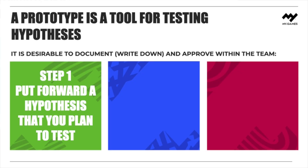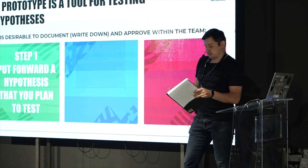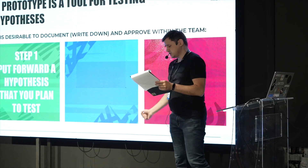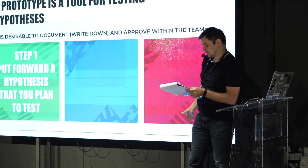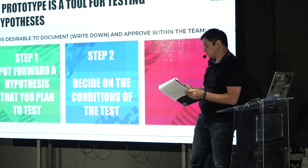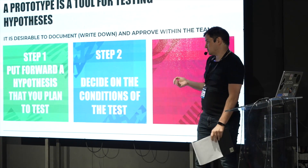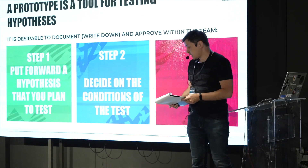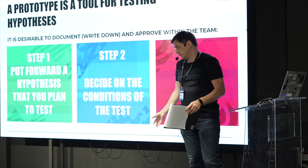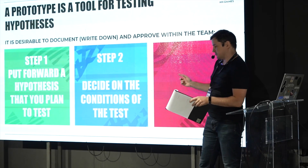Step one: you need to put forward a hypothesis that you plan to test. Write it down — it's very important. And make sure there are no misunderstandings. Then, step two: decide on the conditions of the test. What will you measure? How? And what are the indicators of success? Write it down again, and again make sure there are no misunderstandings at this step. Only then should you start prototyping.